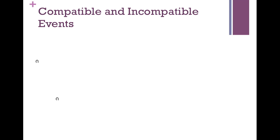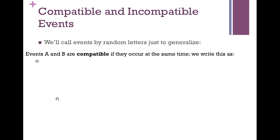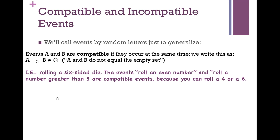Let's talk about compatible and incompatible events. Events A and B are compatible if they can occur at the same time. We write this as A and B not equal to the empty set, meaning there is something in the set. For example, if you roll a six-sided die and the two events are rolling an even number and rolling a number greater than three, you can roll a four or a six, satisfying both. So because these two events can happen at the same time, this is a compatible event.